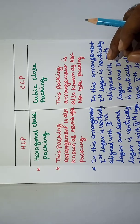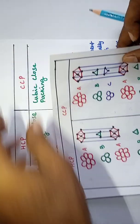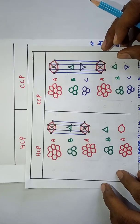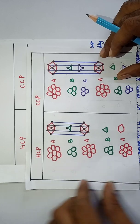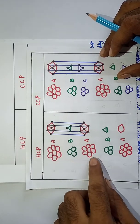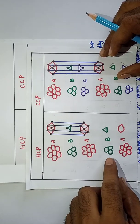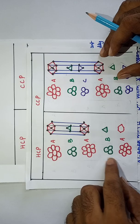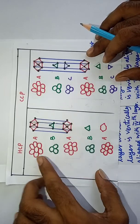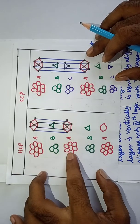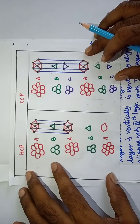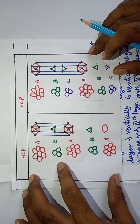Here you can see this is the Hexagonal Closed Packing: Layer A, Layer B, again Layer A, Layer B, Layer A. This is the ABAB type packing.